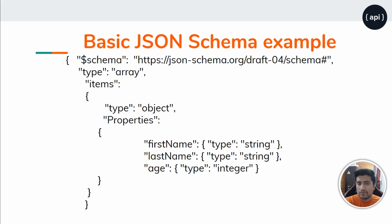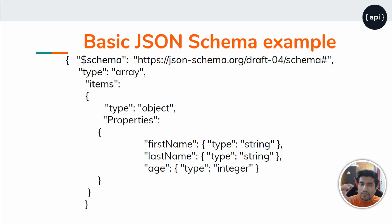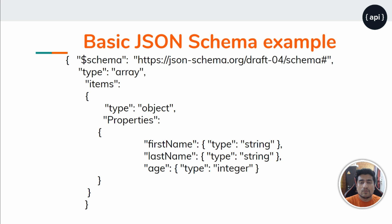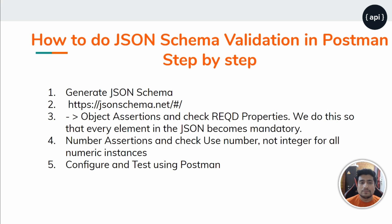Now let's create a JSON schema for it. We're using Draft 4 — a version you can learn more about at jsonschema.org. The schema defines type as array, items as objects, with properties: first name and last name of type string, and age of type integer. If there's a bug and your response returns a number where first name should be a string, the JSON schema validation will fail — that's the key point.